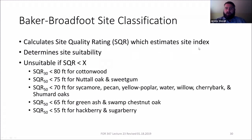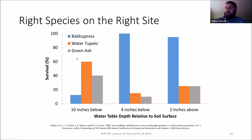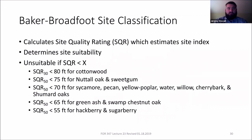Here are the species recommendations. Cottonwood uses a 30-year site index, which is unusual — 25 years would be more typical. Everything else is on a 50-year site index. For cherry bark oak, if your Baker-Broadfoot estimate is less than 70 feet, you should tell the landowner this is not a great site for it and it's likely to fail — you'd essentially be planting trees that will die and get out-competed. Baker-Broadfoot is a pretty powerful tool, and when you understand the soils behind it, it'll get you within a few feet of an actual site index.